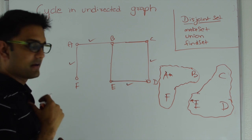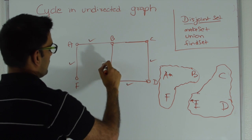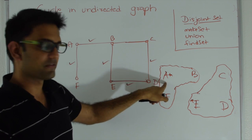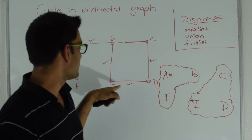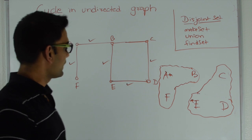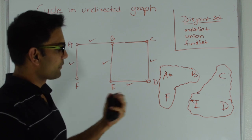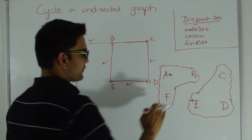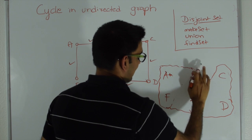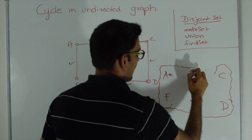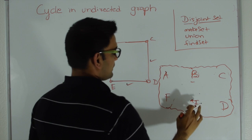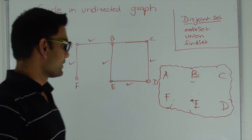Now let's add edge B-E. Find set on B returns A, and find set on E returns E. So A and E are in two different sets right now — this edge is not going to create a cycle. So we do a union of these two sets, ending up with something like this, and let's say E represents the entire set.